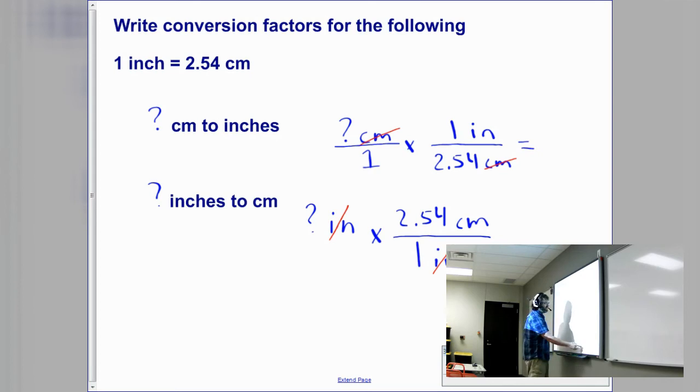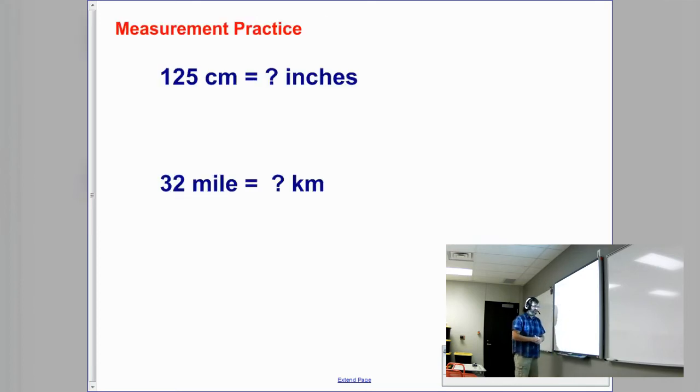Let's put some actual numbers to this. First one is 125 centimeters to question mark inches. This is just like the last problem but now we have a number to actually convert it with. I have 125 centimeters. Remember that it's over one, but I'm not going to write it this time. We remember our equality from the last slide that 2.54 centimeters is equal to one inch. My unit of centimeters is going to cancel out so that just leaves us to actually solve for the math.